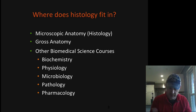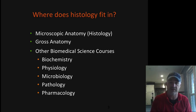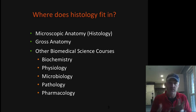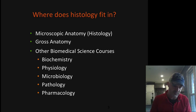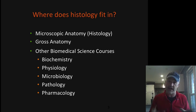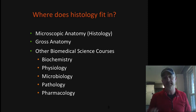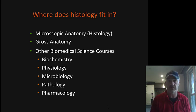Histology also connects to pathology. In histology, we're going to be looking at normal tissue structure and identification. Pathology, on the other hand, would be looking at what should be normal tissue and determining what has changed in it and what that means to that particular person.